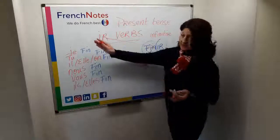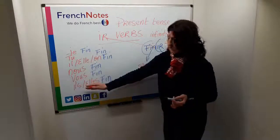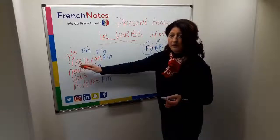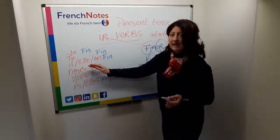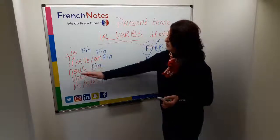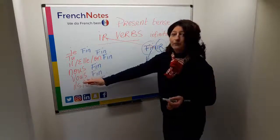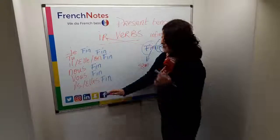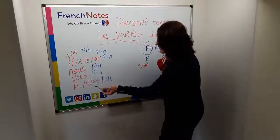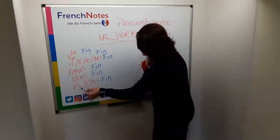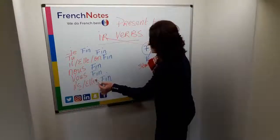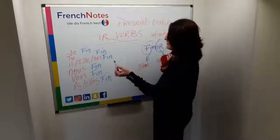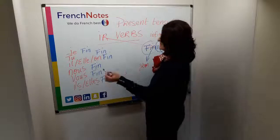So then what you do is you list your subject pronouns: je, tu, il, elle, on, nous, vous, ils, and elles. Note that I haven't pronounced the 's' in 'ils' or 'elles', and then I just add my endings.